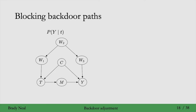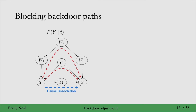We'll start with the general graphical intuition, which is that you want to block backdoor paths — where backdoor paths are the paths that have edges into t that are then paths from t to y. So this path t to m to y is not a backdoor path; it's a directed path, and that's where causal association flows. These are backdoor paths, which non-causal association flows along, and we want to block these paths so that we can isolate the causal association.